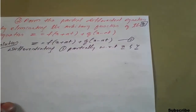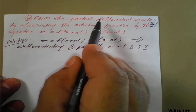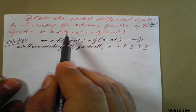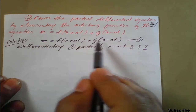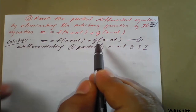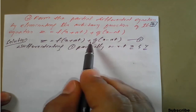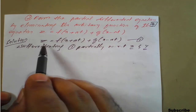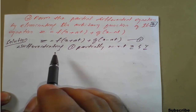The next question is to form the partial differential equation by eliminating the arbitrary functions from the equation z = f(x + at) + g(x - at). Since we have two functions f and g, we need to differentiate z twice — to second order.